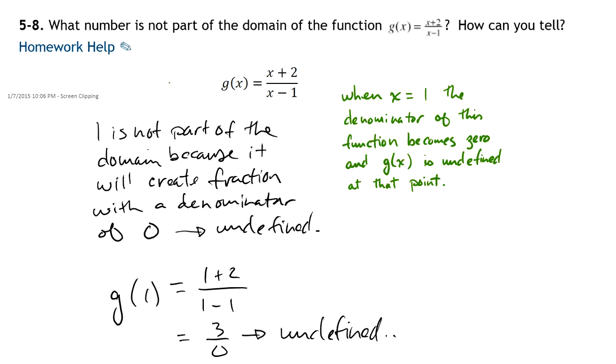What number is not part of the domain of this function? The function is g of x equals x plus 2 all over x minus 1. And how can you tell?